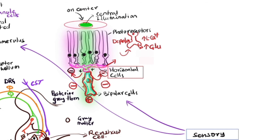This is how horizontal cells and amacrine cells in the retina modulate photoreceptor sensory information through lateral inhibition, enhancing visual perception, the detection of contours of objects, and the overall accuracy of visual perception.